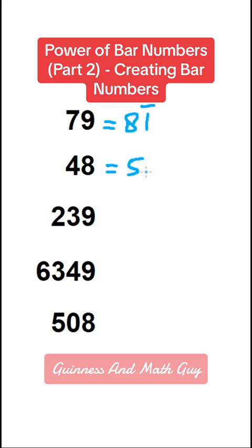So we will write 5 bar 2 because 48 is 2 below 50.